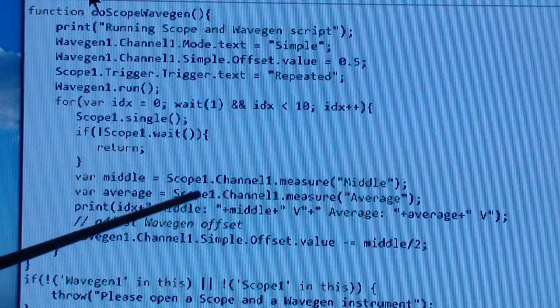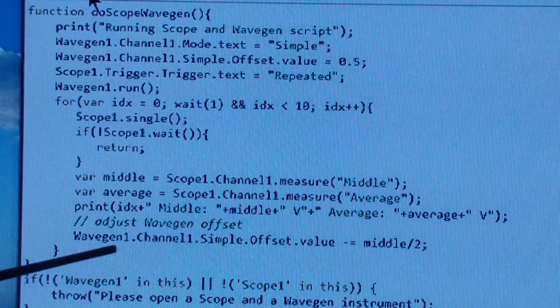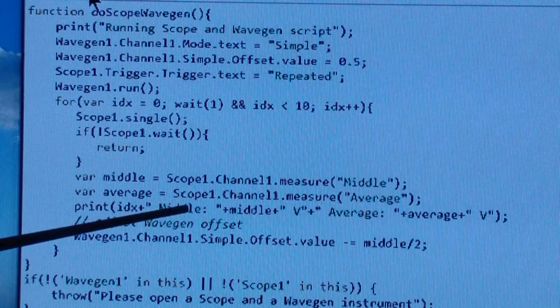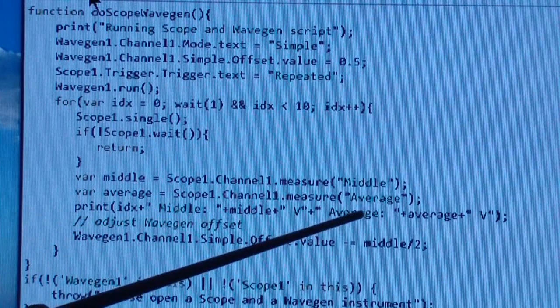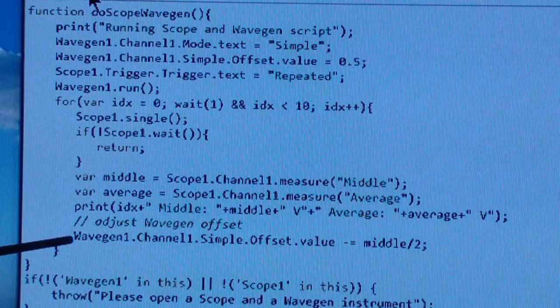If the scope acquisition was successful, you fall through here, you measure, do another measure, and then you print the middle value and the average value.